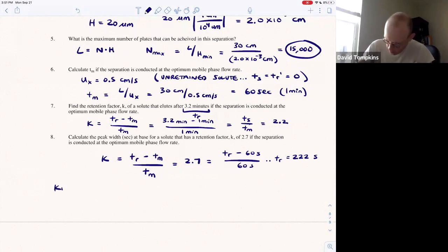So here TR is 222 seconds for this compound. So we know a few things: we know the retention time, we also know the number of plates, right? We calculated that to be 15,000.